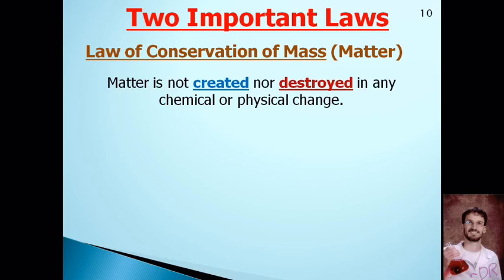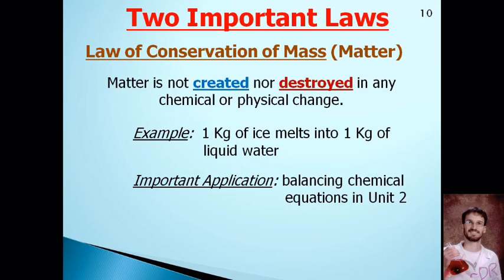The law of conservation of mass states that matter is not created nor destroyed during any chemical or physical change. That means if you have a certain amount of something and a chemical reaction occurs, the amount you have when you're done equals the amount you had when you started. For example, if you burn a one-pound block of wood and collect everything that comes off, it would all add up to one pound. You can't create or destroy atoms — there will always be the same number of atoms before and after.